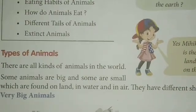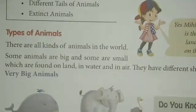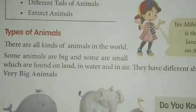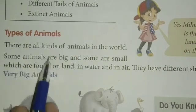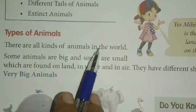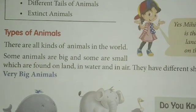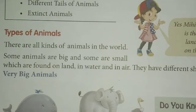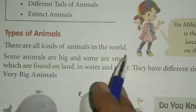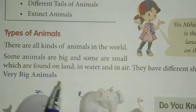Let's start reading. Types of animals. There are all kinds of animals in the world. इस दुनिया में बहुत तरह के animals हैं। Some animals are big — बड़े — and some are small — छोटे से।